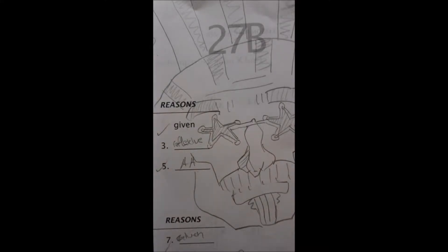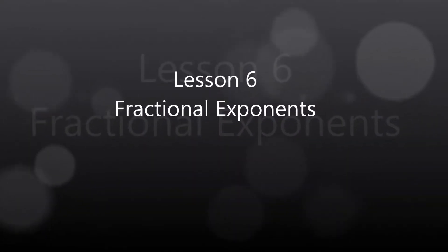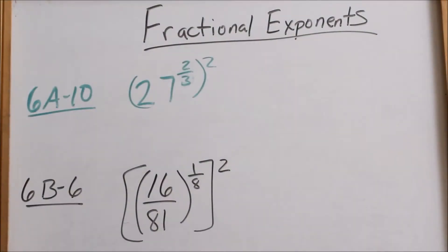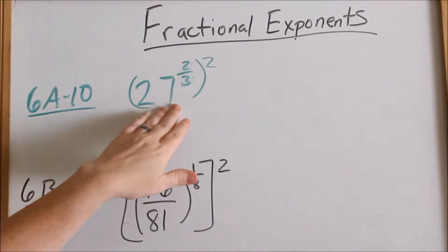The American flag has 13 stripes and 50 stars. You know how I know that? Because Pocket Ronnie helped me with my numbers. We're doing fractional exponents. Look at 6, 8, 10.